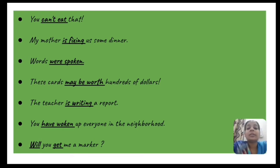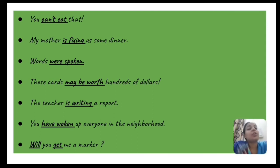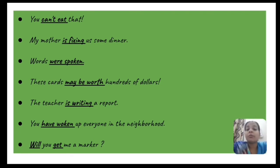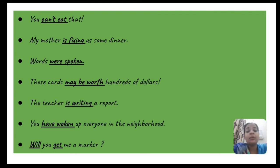'Where is spoken' is again a verb phrase. 'These cards may be worth hundreds of dollars' — 'may be worth' is a verb phrase. 'The teacher is writing a report' — 'is writing' is a combination of auxiliary and main verb, so it's a verb phrase. 'You have woken up everyone in the neighborhood' — 'woken' is the main verb, 'have' is the auxiliary, so together they form a verb phrase.